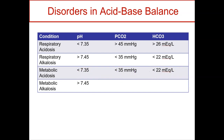For metabolic alkalosis, I know I'm more alkaline and it's metabolic, so my bicarb is too high. How do the lungs buffer? Now they try to hold on to CO2 in order to generate more acid. It's very important that you know the numbers and understand how to interpret what you see.